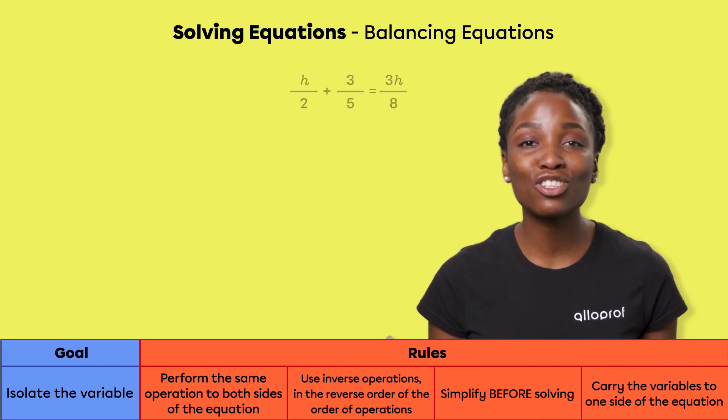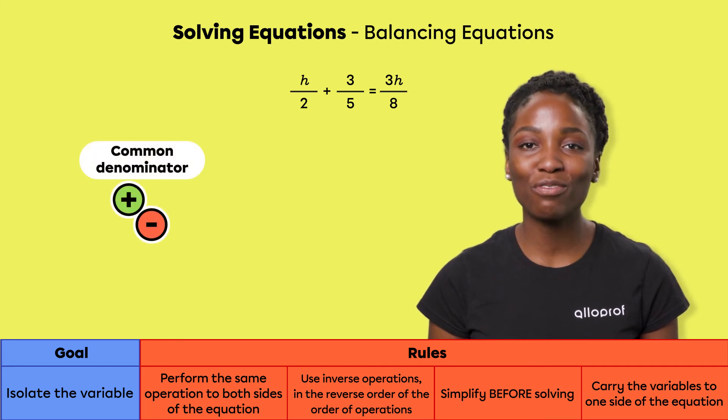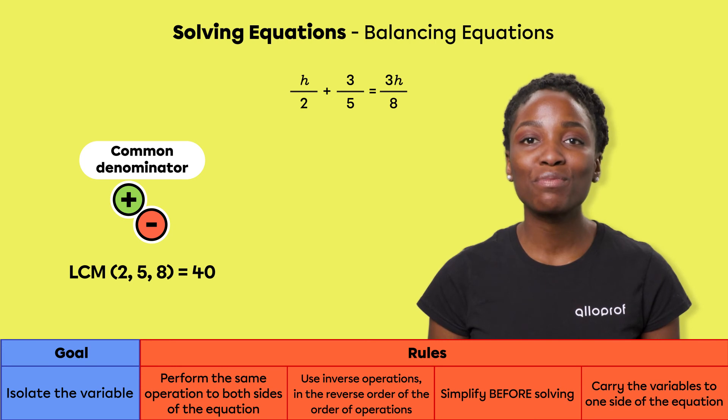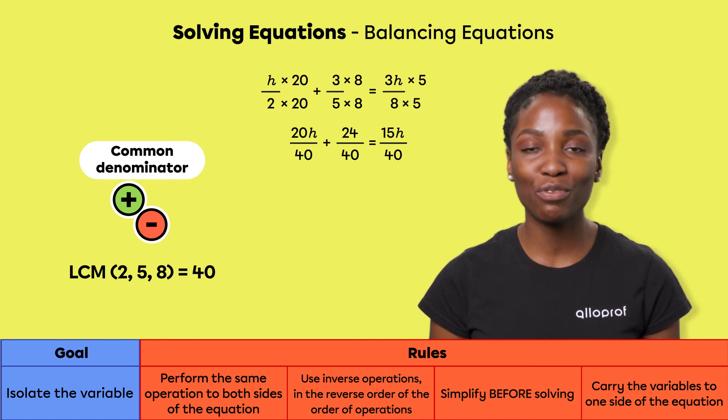There is also a third method, which is generally very popular, that consists of removing all the denominators first. First, we have to find the common denominator of all the fractions. The lowest common multiple of 2, 5, and 8 is 40. So we write all the fractions over 40: h over 2 becomes 20h over 40, 3 over 5 becomes 24 over 40, and 3h over 8 becomes 15h over 40.